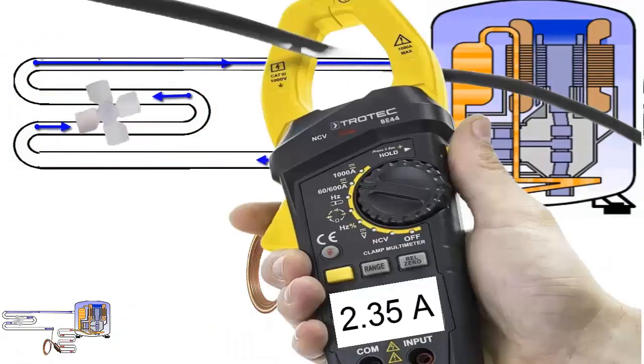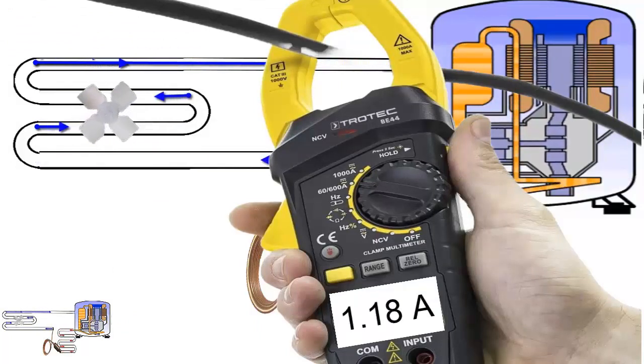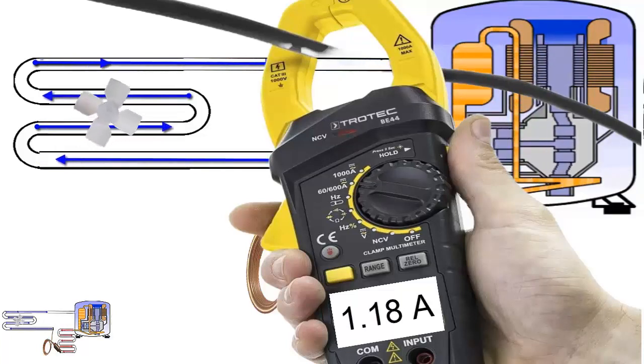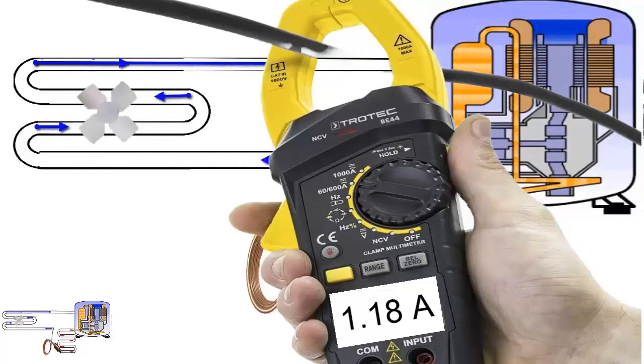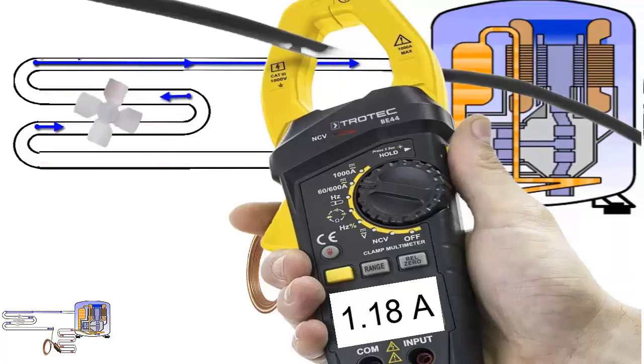The nominal electrical consumption of the 1/4 HP compressor, known as RLA, is 2.35 amperes at 110 volts and 1.18 amperes at 220 volts. You can verify this value using the amperometric clamp.